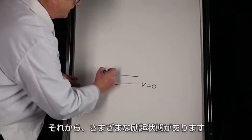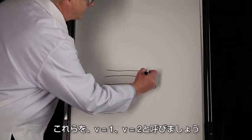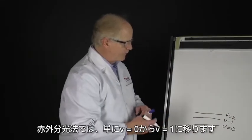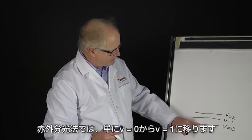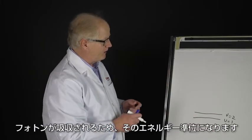Then there can be various excited states which we'll just call v equals one, v equals two. And in infrared spectroscopy, we just take from v equals zero to v equals one, we absorb a photon and we're in the energy level.